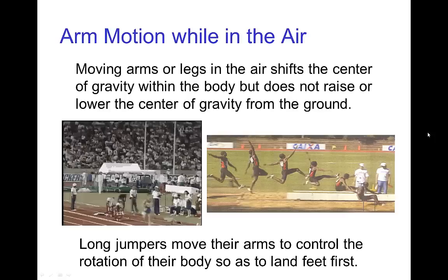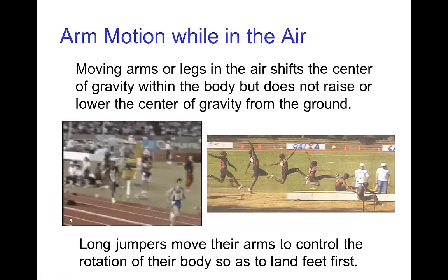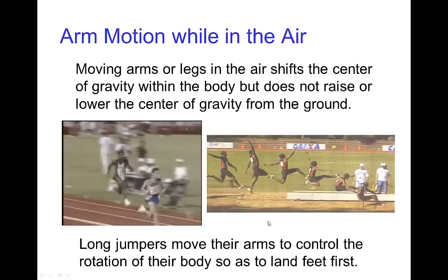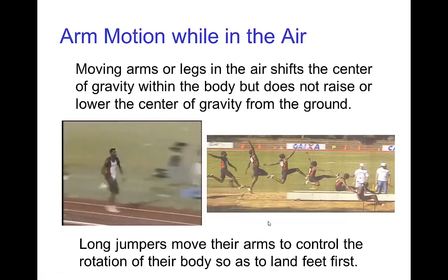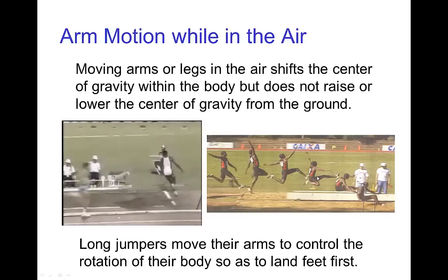Now once someone who's jumping, a character who's jumping is in the air, they often will move their arms and legs. And here's a video of a long jumper, and you'll see once they're in the air they have some arm motion. Here we see, and much of that arm motion is to control the rotation of the body while it's in the air in order to land with the correct orientation. We'll see more about this when we talk about somersaults and twists and other such motion.